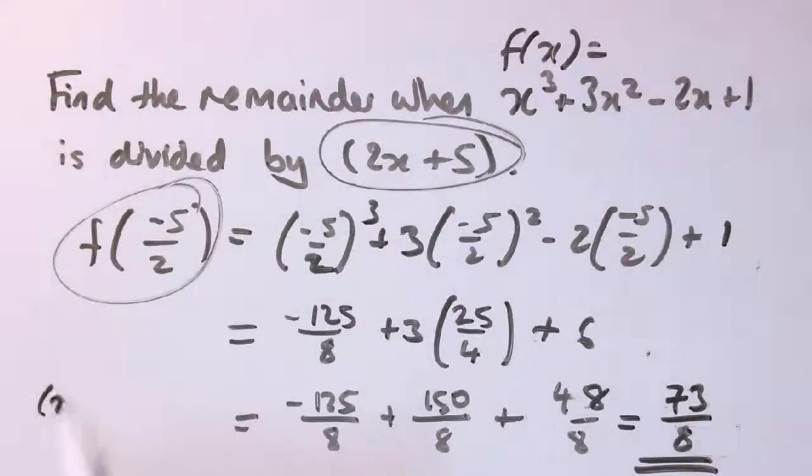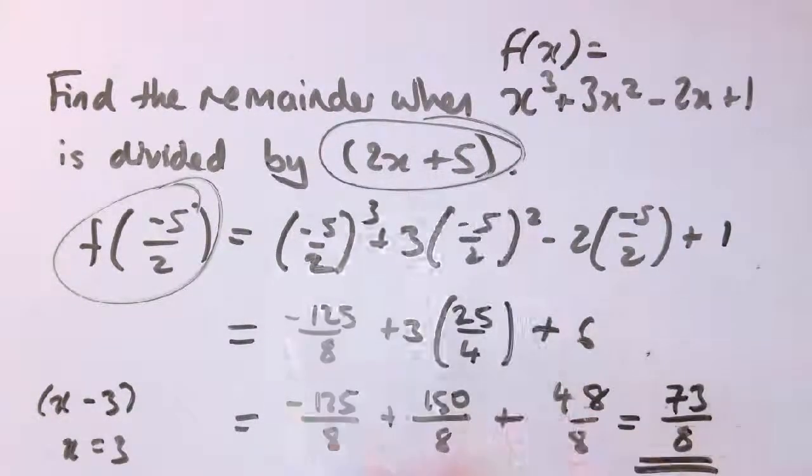In the case where x minus 3 was the factor, x equals 3 makes it zero. But in the case of 2x plus 5, minus 5 over 2 makes it zero, so that's what we substitute in. And the logic works in exactly the same way as for the original one.